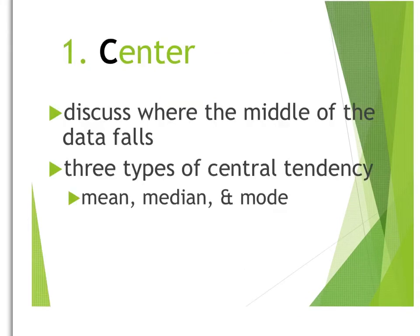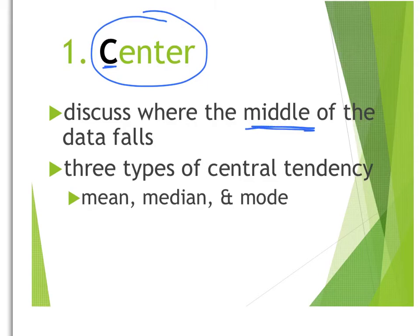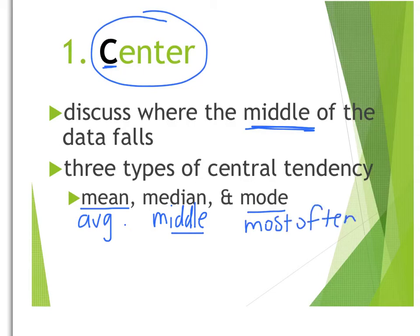The first thing we can talk about is the center of the graph — that just means describing where the middle of the data falls. We can do that in three basic ways: by the mean, which is the average; by the median, which is the middle number; or by the mode, the number that occurs most often. The way we choose depends on the shape of our graph, which we'll get more into later. The majority of the time we're going to use the mean or the median to describe the center, and that depends on whether it's symmetrical or skewed.